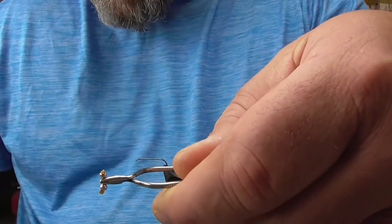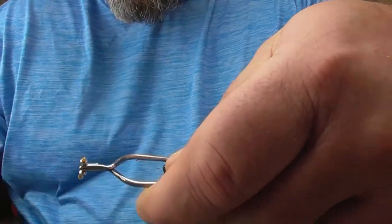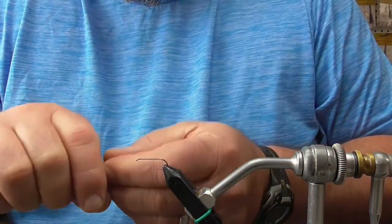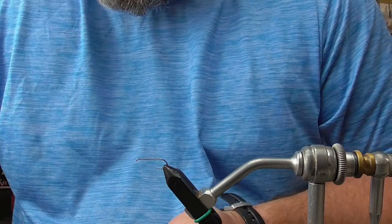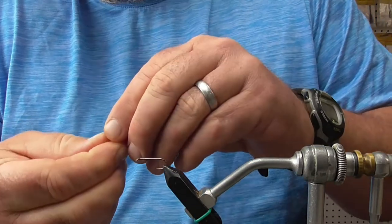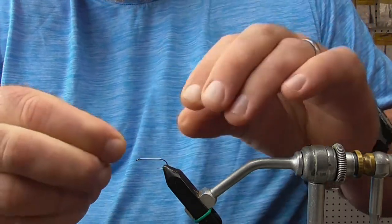So what we have now is two tungsten beads with a short piece of monofilament going between them. What I can actually do with this...